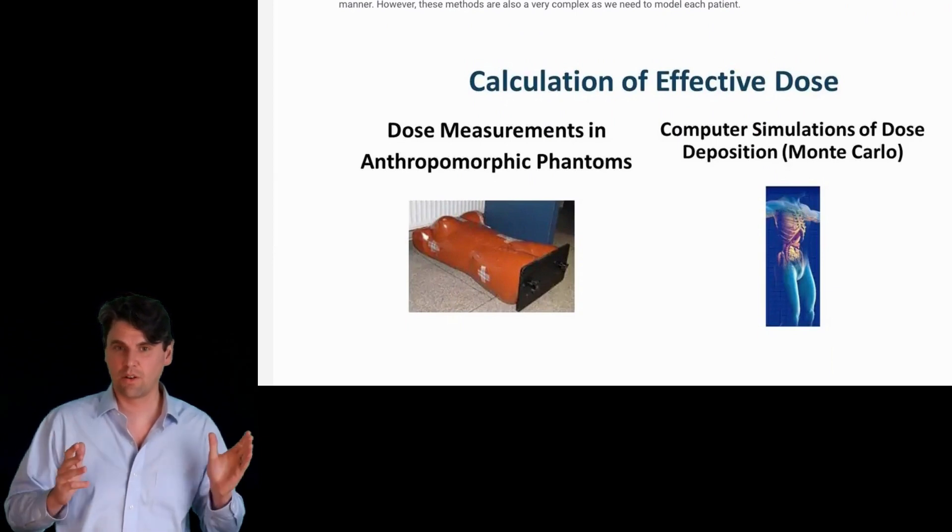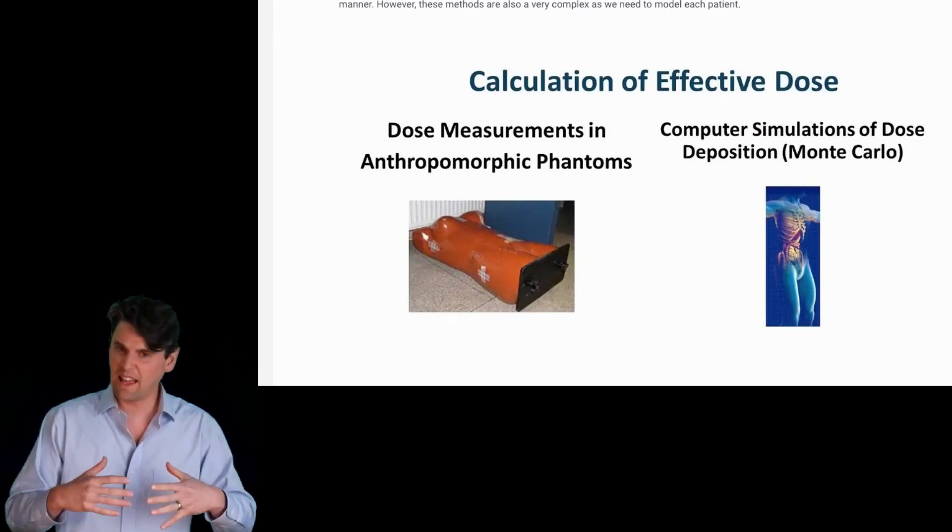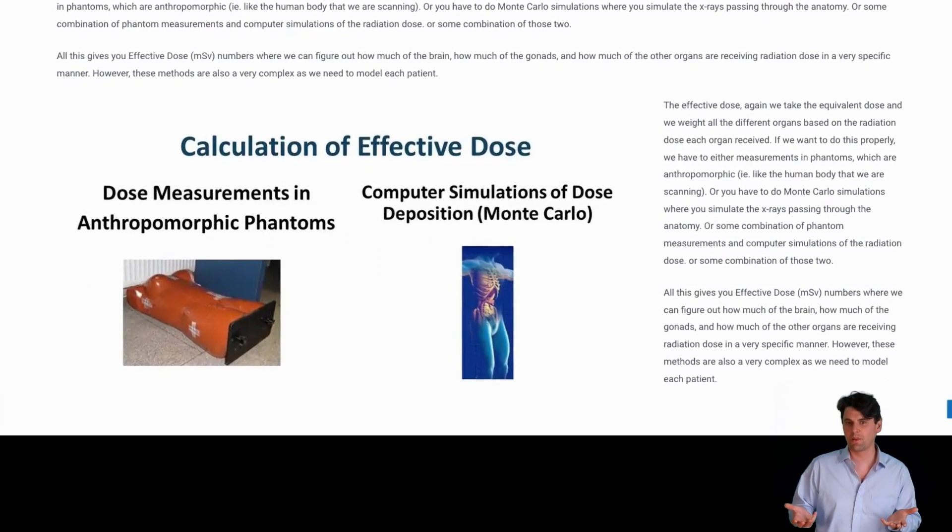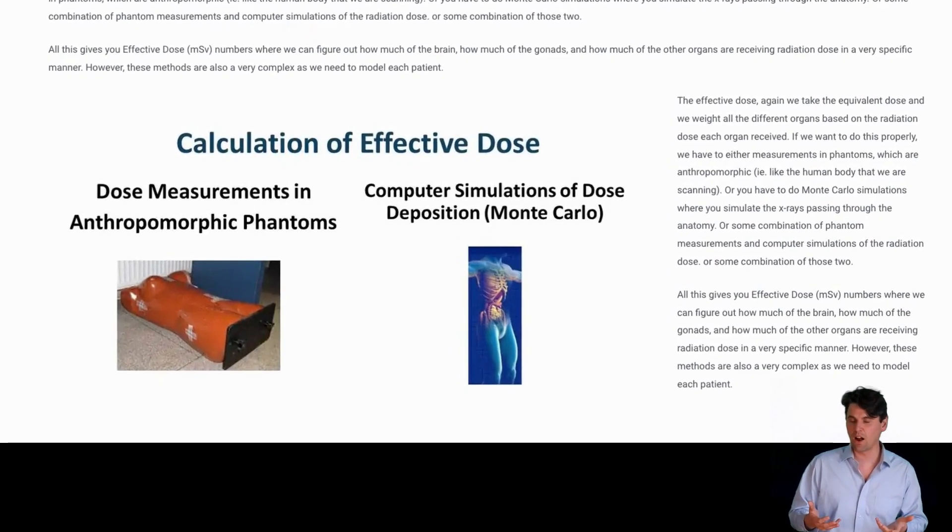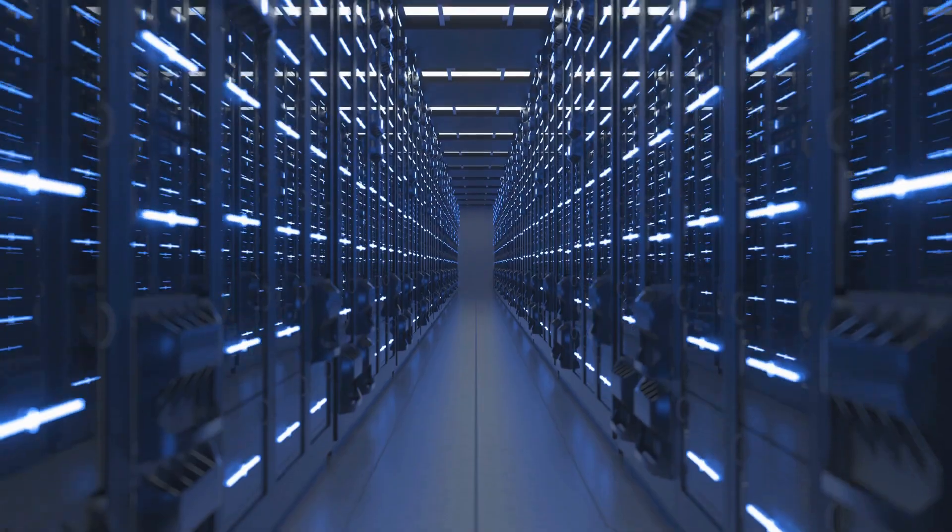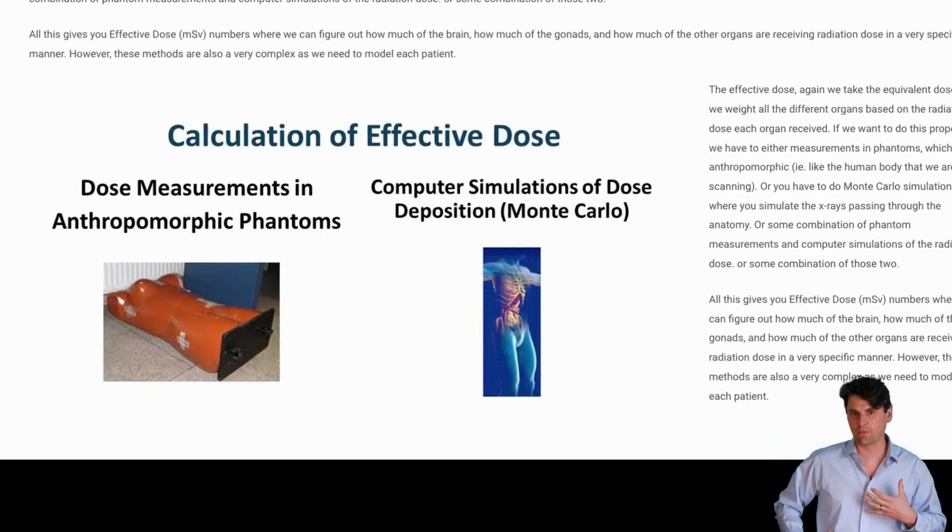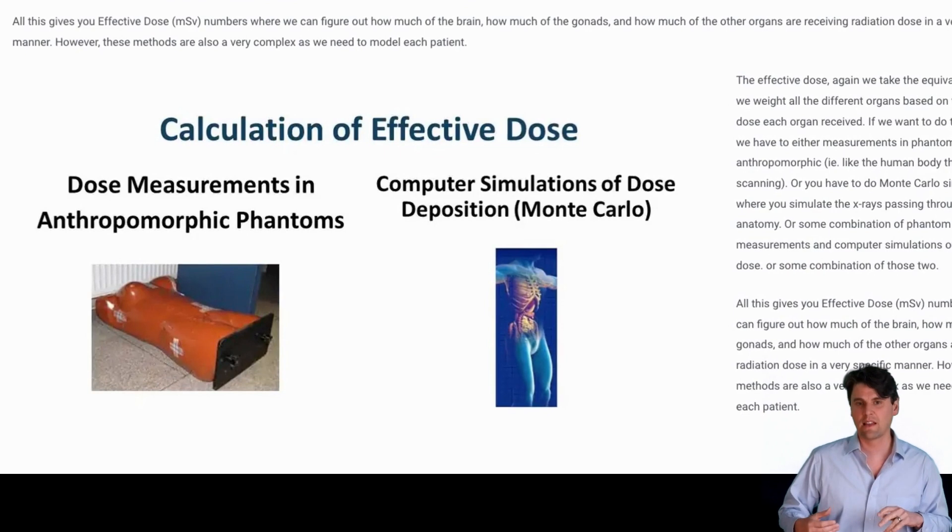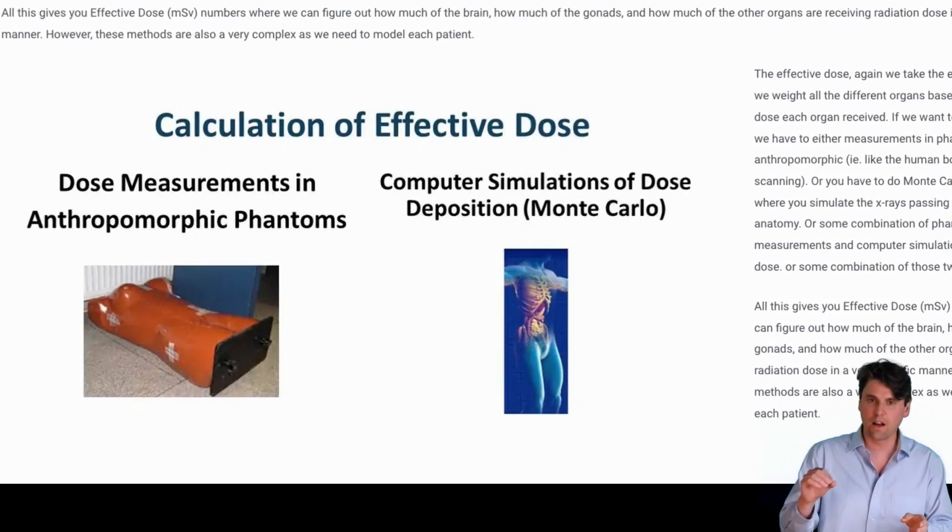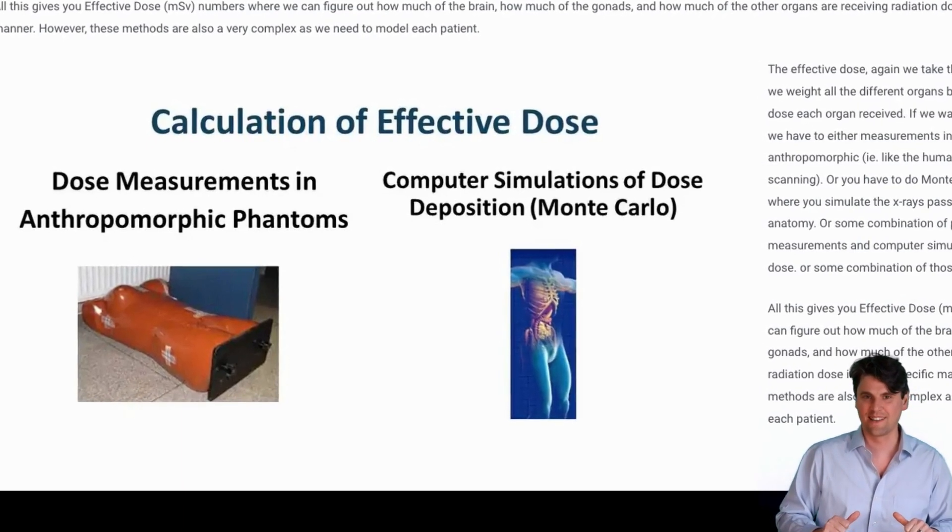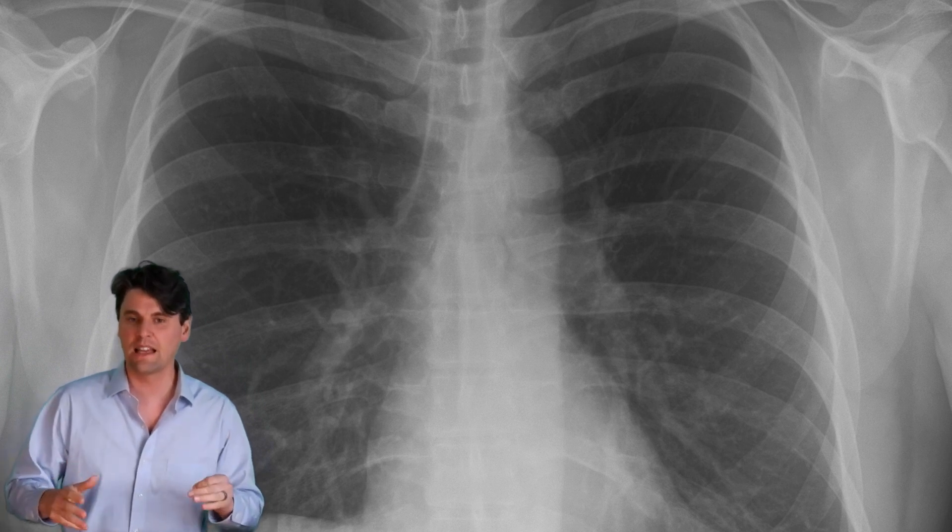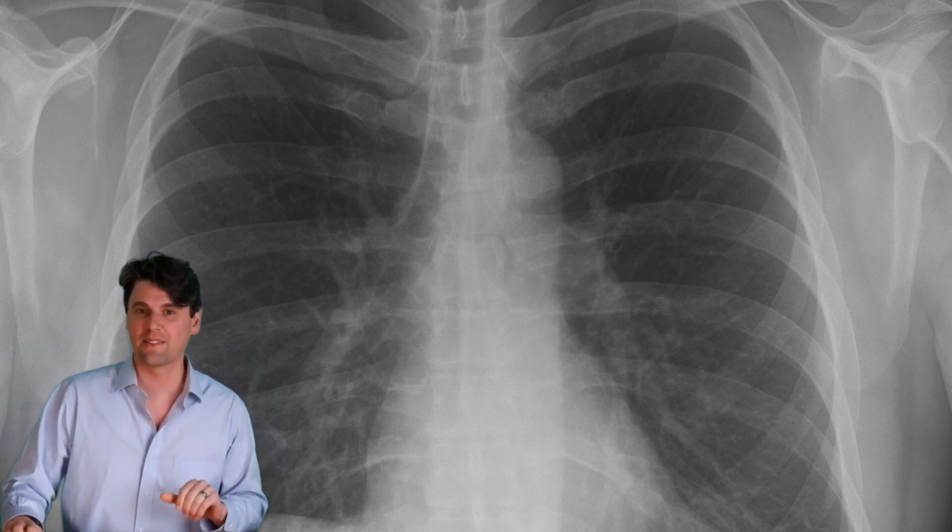Actually calculating the effective dose is quite difficult in reality, because you either need to have an anthropomorphic phantom to take radiation measurements throughout that phantom, or if you're using a human body, you would do what we call a Monte Carlo simulation. You get a CT of the patient, then model each of the different regions, and figure out how much dose is distributed throughout the body in the different regions. Then we can calculate the effective dose by adding up those contributions to all the different body parts. These are good research tools, but in the clinic, we're looking for something simpler that can be carried out relatively easily, and is an approximation for these more advanced methods.